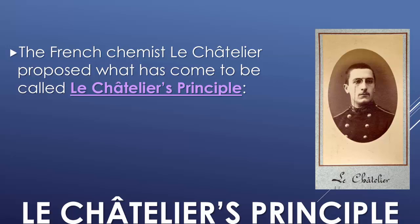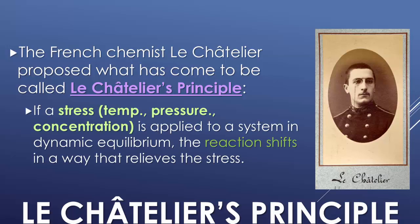The entire idea behind shifts and stresses at equilibrium comes from a French chemist by the name of Le Chatelier. His principle states: if a stress — a change in temperature, pressure, or concentration — is applied to a system at equilibrium, the reaction will either make more products or reactants to relieve that stress. Dynamic equilibrium means that if we affect any part of the equilibrium, it will always eventually return to equilibrium.